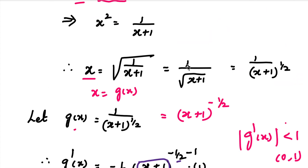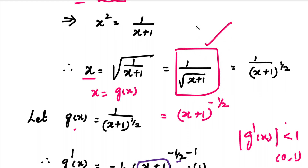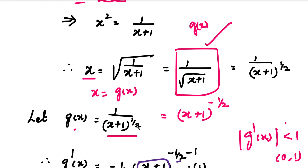We have x = 1 divided by root of (x+1). This is our g(x) value. We rewrite g(x) as 1 divided by (x+1) to the power 1 by 2. Now we differentiate. In the denominator of this function, we write the differentiation in the numerator.